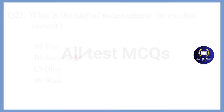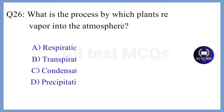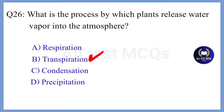Question 26. What is the process by which plants release water vapor into the atmosphere? The correct answer is Option B. Transpiration.